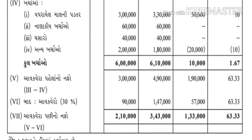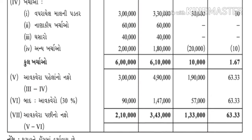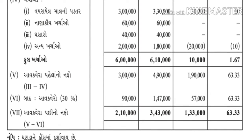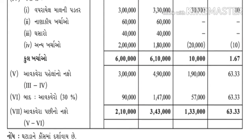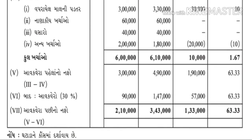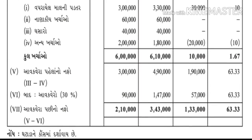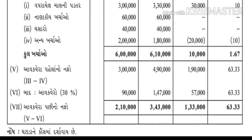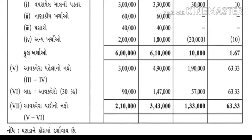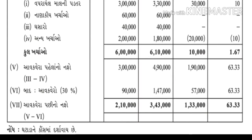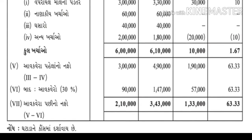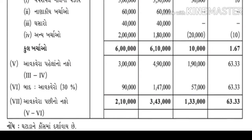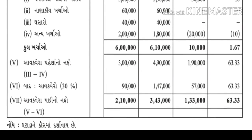છેલ્લે, આવકવેરા પછીનો જે નફો શોધ્યો - એને વધારો/ઘટાડો - ટકાવારી - ભાગ્યા 2 લાખ 10 હજાર - 2016ના ખાનામાં - ગુણ્યાં 100. ત્યાં ટકાવારી કૌંસ (-) - માઈનસ - સમજવાનું - આ દાખલો તમે નોટમાં ઉતારી લો, ગણો, પ્રૅક્ટિસ કરો.